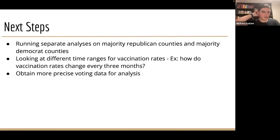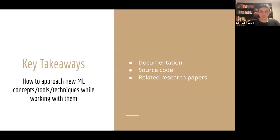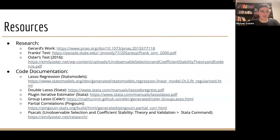The next steps in our research are running separate analyses on majority Republican counties and majority Democrat counties, looking at different time ranges for vaccination rates — for example, how does vaccination rate change every three months and how does that impact our beta coefficient — and possibly obtaining more precise voting data for analysis. Some key takeaways: we learned a lot in this research process by looking at documentation, source code, and related research papers. These are some good habits to be conscious of. We also have resources available for anyone interested in these subjects further.